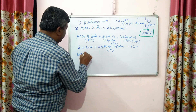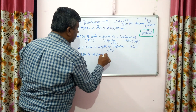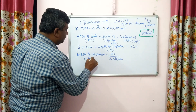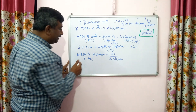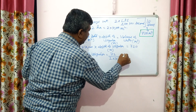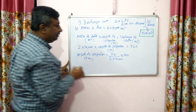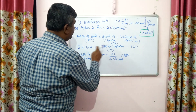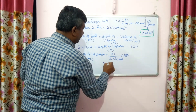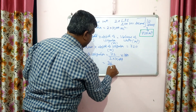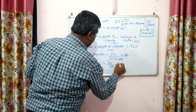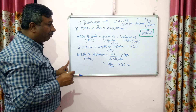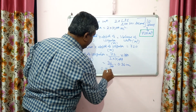So depth of irrigation equals 720 divided by (2 × 10,000). This gives the depth in metres. To convert it into centimetres, multiply by 100 because 1 metre equals 100 centimetres.